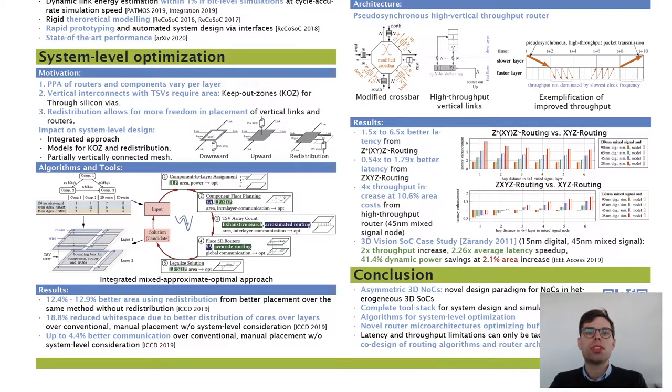For system-level optimization of NOC for heterogeneous 3D SOCs, I considered application-specific network design. The motivation is that the PPA of routers and components will vary between layers, that the TSVs for vertical interconnects require area, but that we also wanted to make the advantages of redistribution available at system level. Therefore, we proposed algorithms and tools at ICCD 2019.